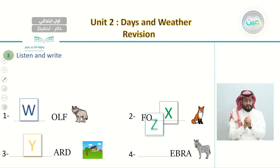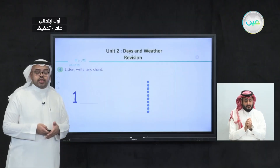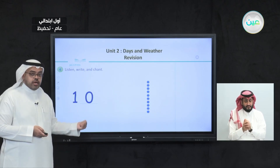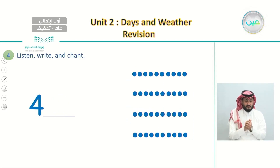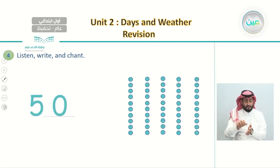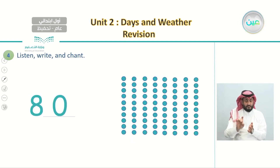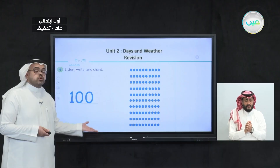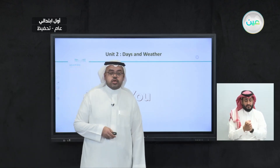We finished the unit by learning how to count from 10 to 20. Let's count from 10 to 100: 10, 20, 30, 40, 50, 60, 70, 80, 90, and 100. This is everything we learned in this unit. We have now reached the end of our lesson. Thank you for watching, and I'll see you next time.